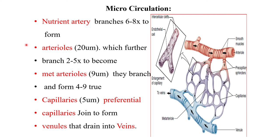Today our topic is microcirculation, which is the objective of the circulatory system. Nutrient arteries are the last arteries in division that form arterioles — one entering the bone, another entering the muscle, and others entering the nerves — to supply nutrition to the structures of the body. A nutrient artery branches six to eight times to form arterioles.